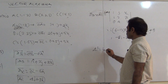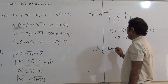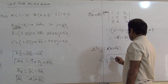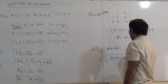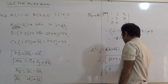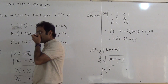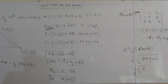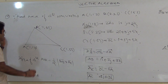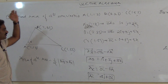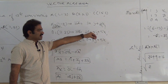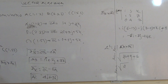Area of triangle = (1/2)|AB×AC| = (1/2)√(36 + 9 + 16) = (1/2)√61. Summary: convert points to position vectors, find two adjacent sides AB and AC, compute their cross product, find its magnitude, and multiply by 1/2.